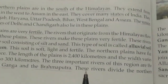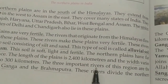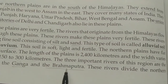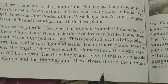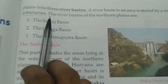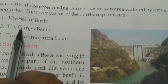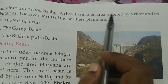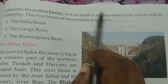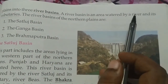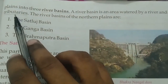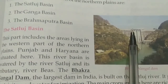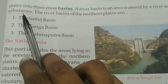In the Northern Plains there are three important rivers: Satluj, Ganga and Brahmaputra. These rivers divide the Northern Plain into three river basins — the Satluj basin, the Ganga basin and the Brahmaputra basin. A river basin is an area watered by a river and its tributaries. Tributaries are rivers or streams that flow into a larger main river.